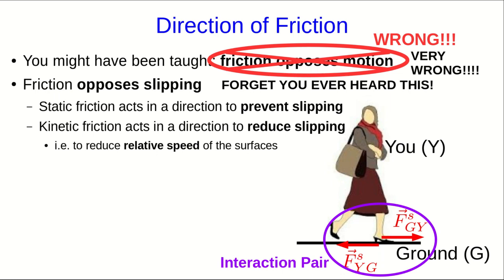A general rule for how to figure out which direction a friction force points is that static friction acts to prevent slipping. So in this case, if there had been no friction, your foot would have slipped backwards. And so the static friction acts forwards to prevent that. Kinetic friction acts in a direction to reduce slipping. Or to put it another way, it acts to reduce the relative speed of the two surfaces that are slipping across each other.